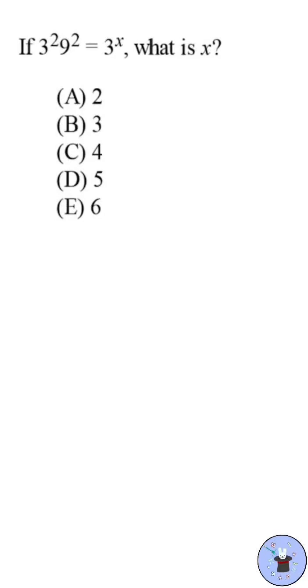This SAT problem is considered one of the hardest math problems in the section. If 3 squared times 9 squared equals 3 raised to x, what is x? Can you solve this?